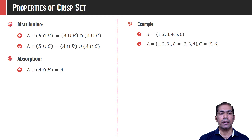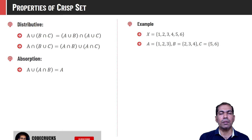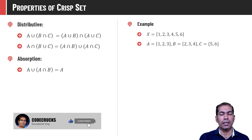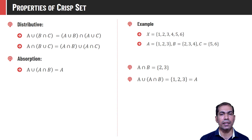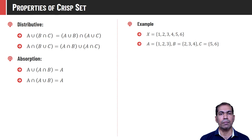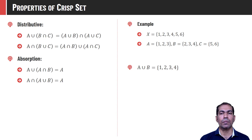Absorption property: A union (A intersection B) is always A. We know that A intersection B will be a smaller set — a collection of elements present in both A and B — so that intersection will always be a subset of A. If we take the union of a set with its subset, we definitely get the set itself. A intersection B in our case is {2, 3}, and the union of that with A gives {1, 2, 3}, which is set A. Similarly, A intersection (A union B) equals A, because A union B is a superset of A. In our case A union B = {1, 2, 3, 4}, and when we take the intersection of that with A we get set A itself.